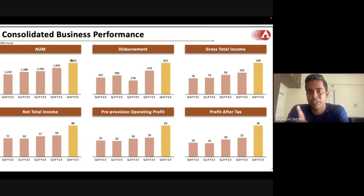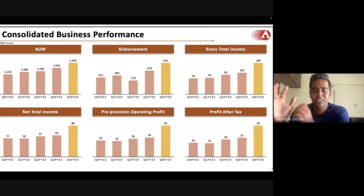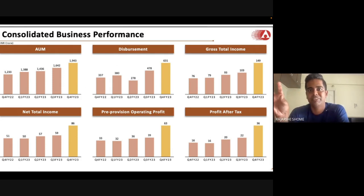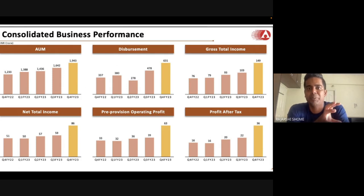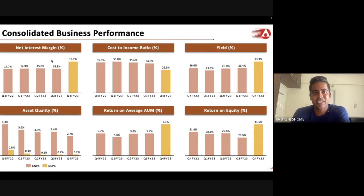For any financial, Q4 is always the best quarter; Q1 is always the worst, then Q2, then Q3, then Q4. The second half of a fiscal is always better than H1 because H2 includes the festive period. You need to take these seasonal factors into consideration when analyzing the numbers. The NIM is going up, and the yield is now at 33 percent — a level Arman has never seen in its history.